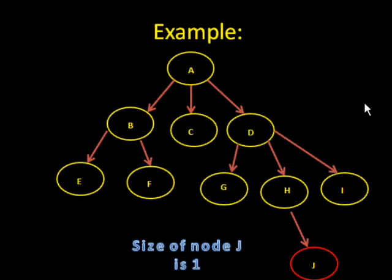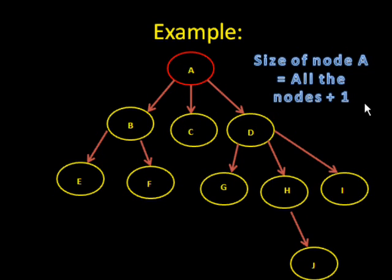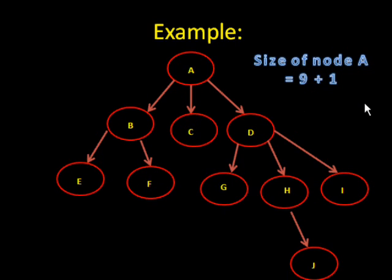The size of node J is one. The size of node A is all the nodes in the tree plus one. Or rather, all the nodes that descend from A plus one, which would be equal to all the nodes in the tree. In this example, that's nine plus one, which is ten.